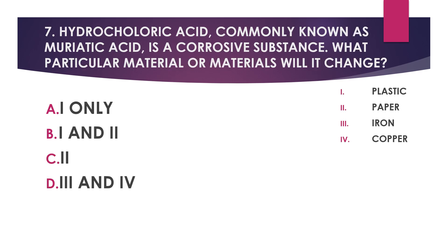Number seven: Hydrochloric acid, commonly known as muriatic acid, is a corrosive substance. What particular material or materials will it change? 1) Plastic, 2) Paper, 3) Iron, 4) Copper. Choices: A) One only, B) One and two, C) Two, D) Three and four.